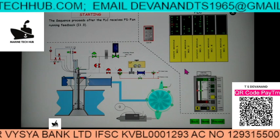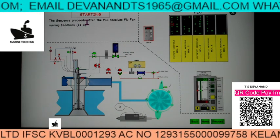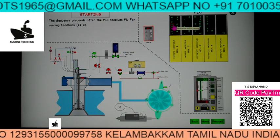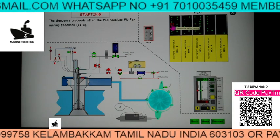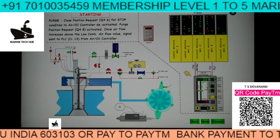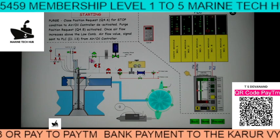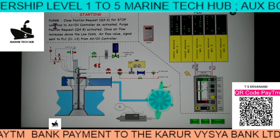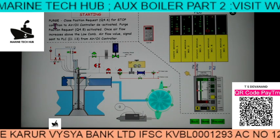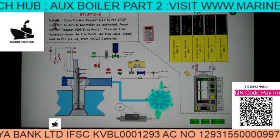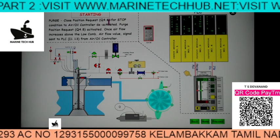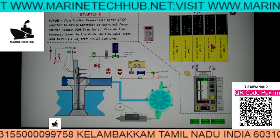The sequence proceeds after the PLC receives the FD fan running feedback — 'combustion air fan running.' Now we go to purging. Normally we want to purge to push all the flue gas inside the boiler. The close position request is 4.6 — module 4, position 6 — meaning this is in the close position. The signal is going from the air oil controller to the PLC and back. If it is not in the close position, it will not start; the interlock will be there. You can see the air oil controller deactivated.